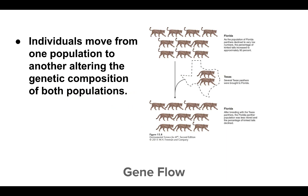In regards to gene flow, the arrival of individuals from a different population alters the number of alleles in a population. Here we have a group of panthers from Florida interbreeding with several from Texas. In a population that has experienced natural or artificial selection, high gene flow from outside can prevent the population from responding to selection. Gene flow can be helpful in bringing genetic variation to a population that lacks it — the addition of the Florida panther has brought more genetic variation to this species.